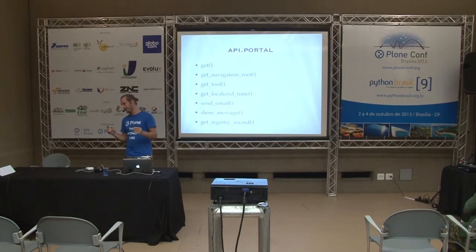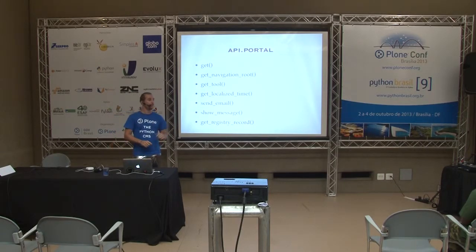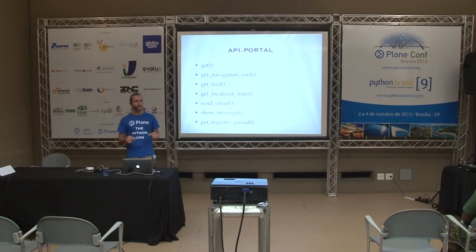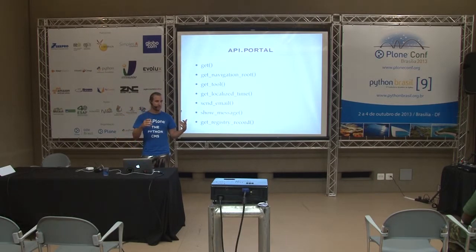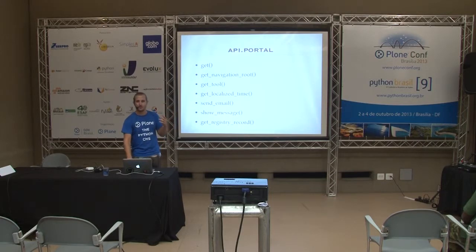You also have localize_time and send_email. Sending email across Plone versions is tricky - sometimes you have to do it one way, sometimes another, and the parameters are not well named. Here we strive to be very simple: just call the method and do it. show_message will show what they call the portal notification status message bar. Then we have get_registry_record and set_registry_record, with which you can manage PloneApp registry records. Instead of importing IRegistry from plone.app.registry and an annotation interface, you just use this and give it the record as a string. You lose three or four lines of importing.